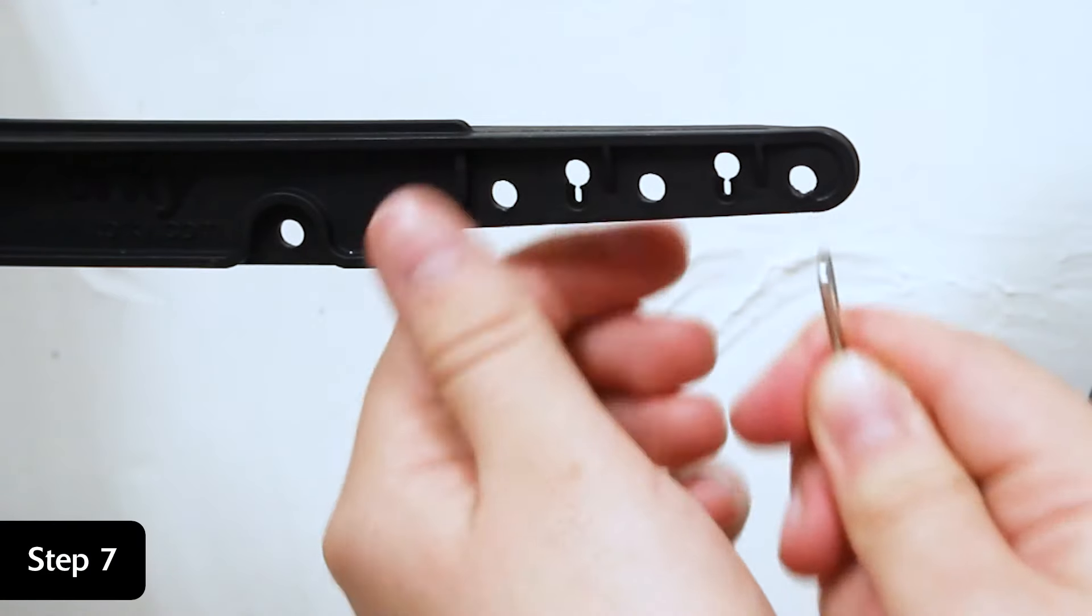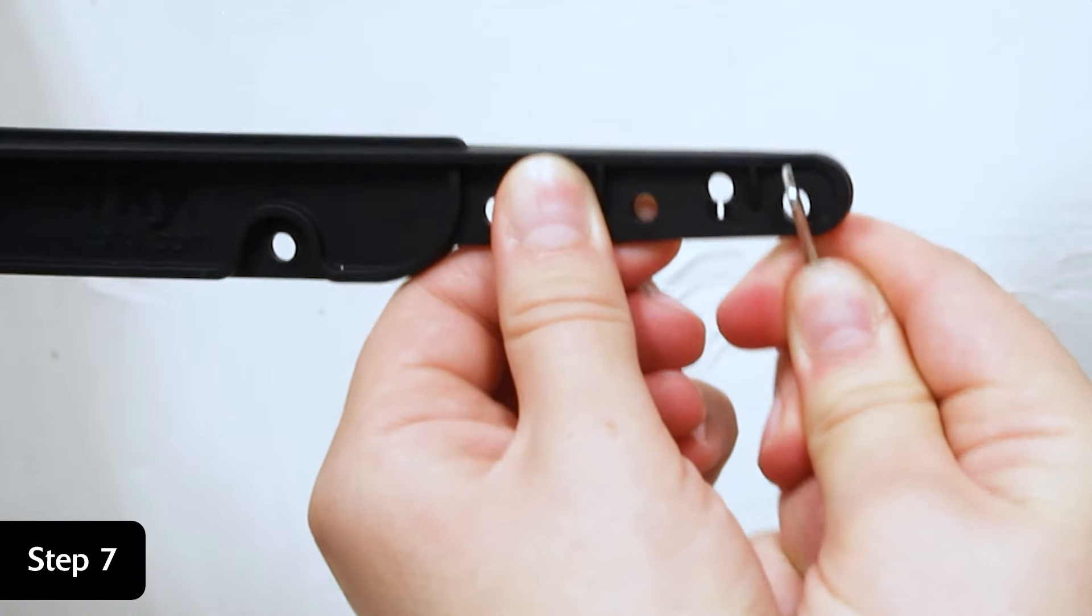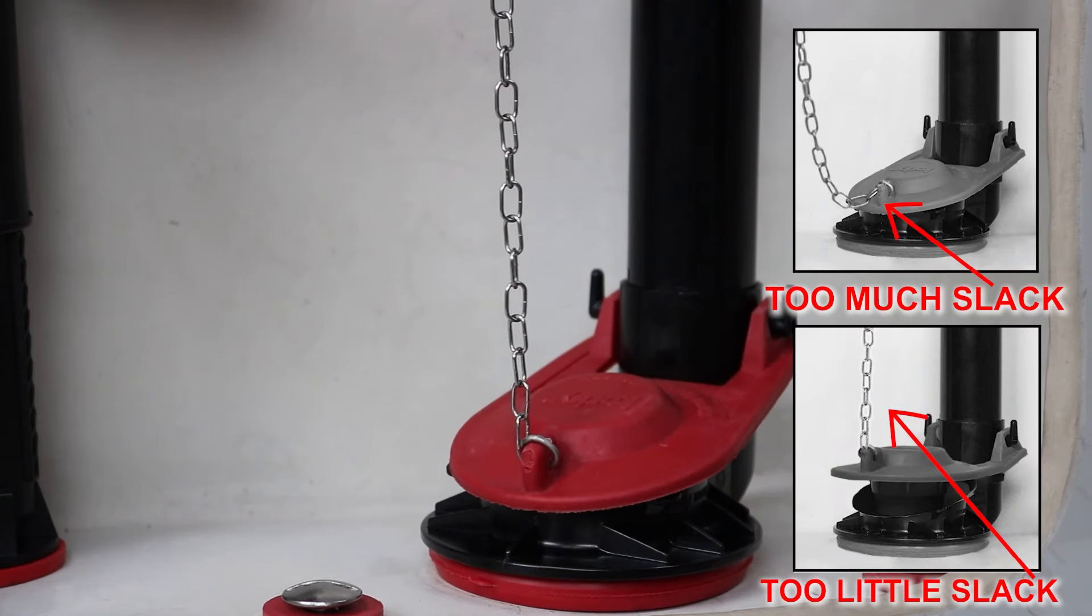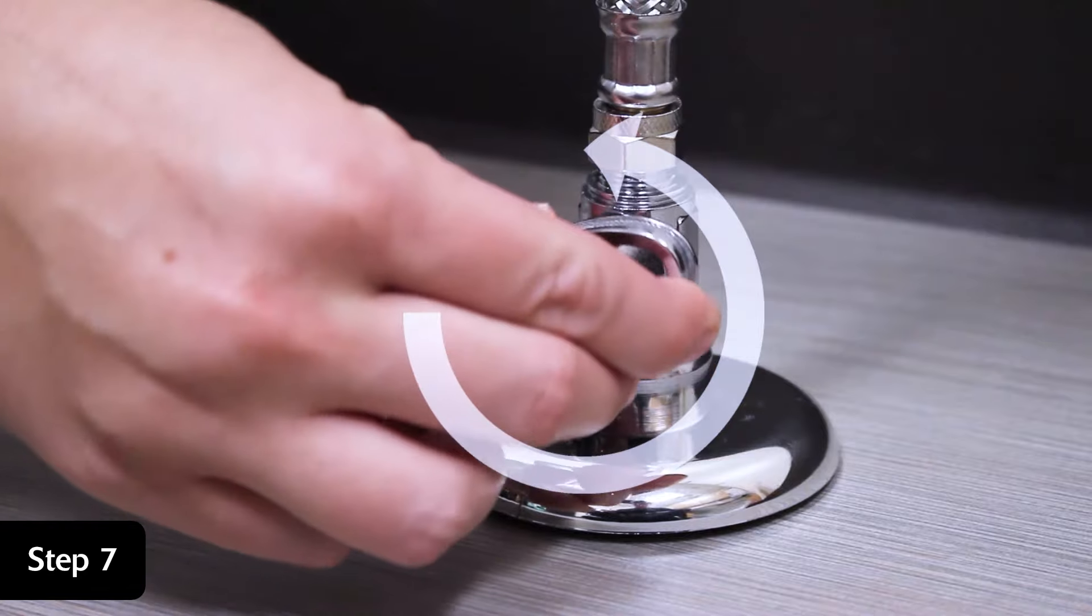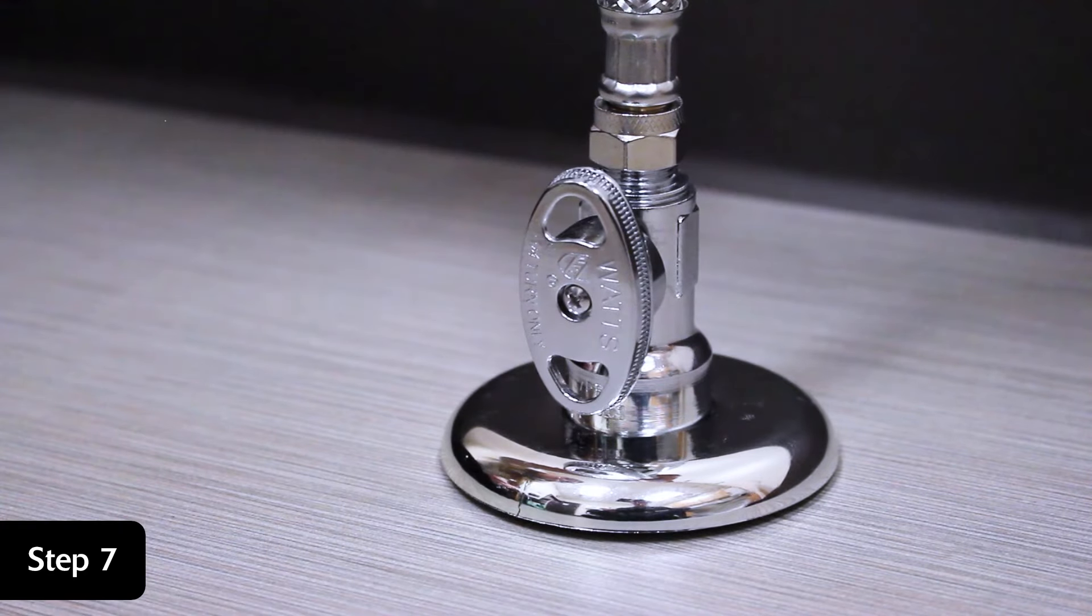Attach the flapper chain to the flush lever with minimal slack and reattach the water supply line. Turn the water supply on and wait for the tank to fill completely.